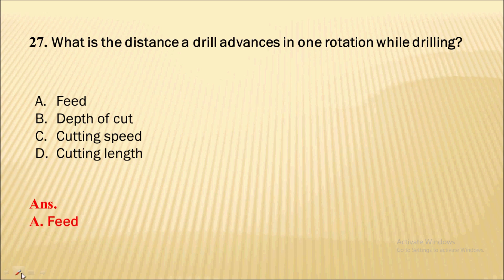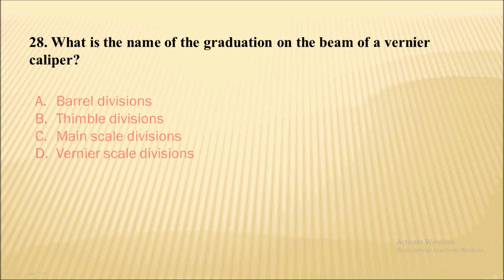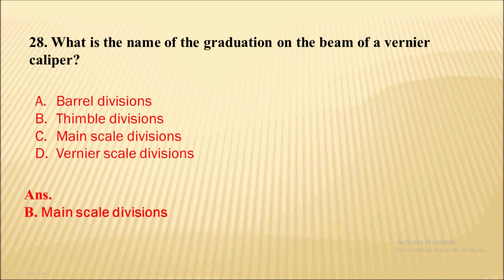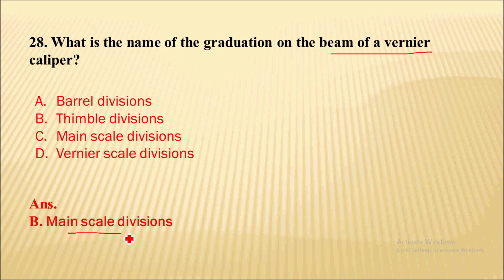What is the distance that a drill advances in one rotation while drilling? That distance is called the feed. What is the name of the graduations on the beam of a vernier caliper? On the beam there is the main scale division, and on the vernier slide there is the vernier scale division.